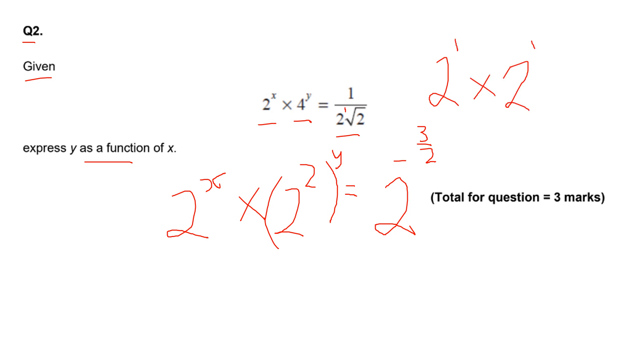Remember it is one over this, so you're going to have one over two to the power of three halves. One over means it's going to be a negative index, so we have two to the power of minus three halves.